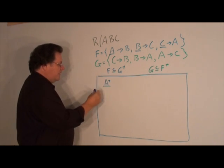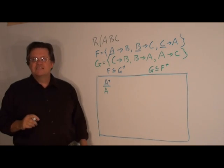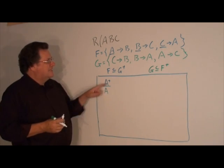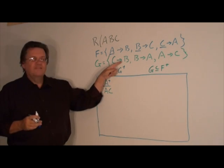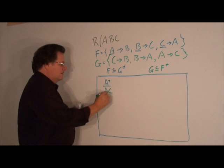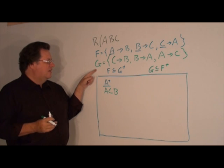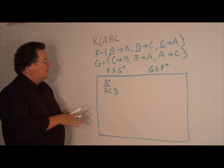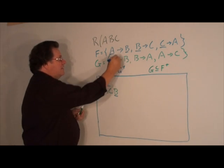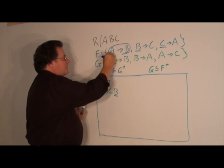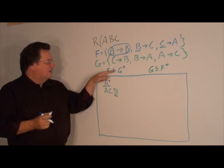A closure will include A by reflexivity. Then, A→C, and C→B. So A closure with respect to G includes A, B, C. It contains the right-hand side B, therefore the functional dependency A→B will be in G closure.